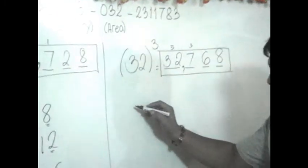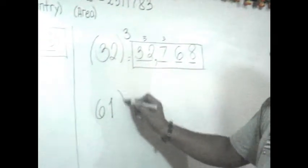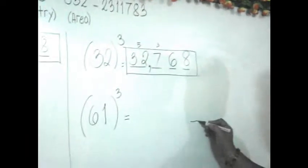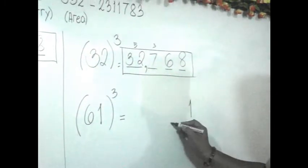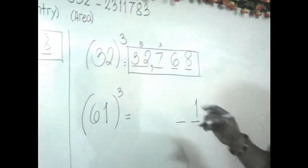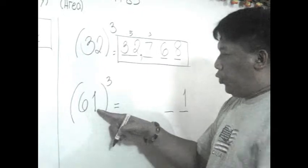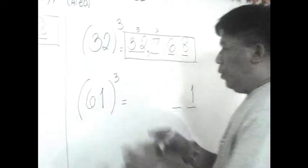To make it faster, do it directly without writing. Take 61³ as a bigger example. Step 1: cube the second digit — 1³ = 1. Step 2: consider the digits 6, 1, and power 3, squaring the second term. 1² = 1, times 6 = 6, times 3 = 18. Write 8, carry 1.